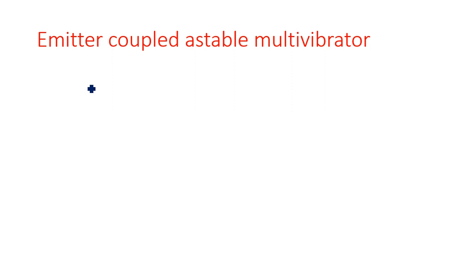Hi everyone. In this video I am going to explain about the emitter coupled astable multivibrator. Earlier I mentioned there are two different types of configurations available in astable multivibrators: one is collector coupled and the second is emitter coupled. We have already seen the design concepts and operation of the collector coupled configuration, so in this video the emitter coupled configuration is going to be explained.